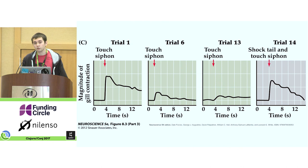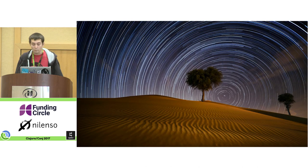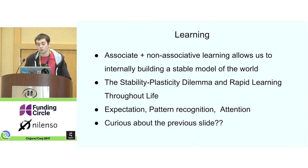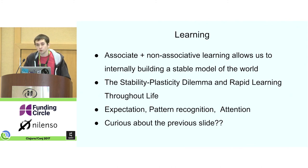These properties can be combined. From trials 1 to 13, as we touch the siphon, the magnitude of the gill contraction goes down. But at trial 14, the shock of the tail and the touch of the siphon get paired, and we see almost the exact same response as trial 1. This highlights the basis for how our memory works. Associative plus non-associative learning allows our brains to create a stable representation of the world, so we can have expectations, predict what's coming next, and react to things that don't meet our expectations.